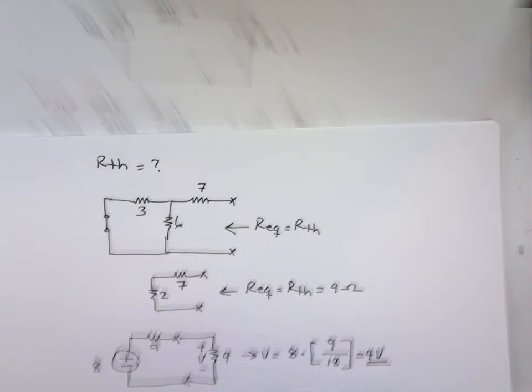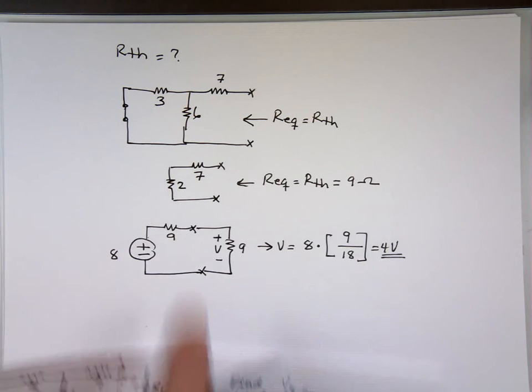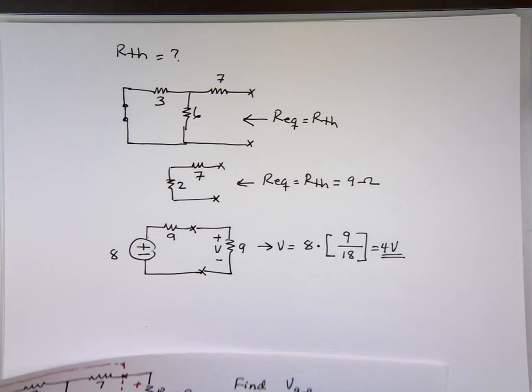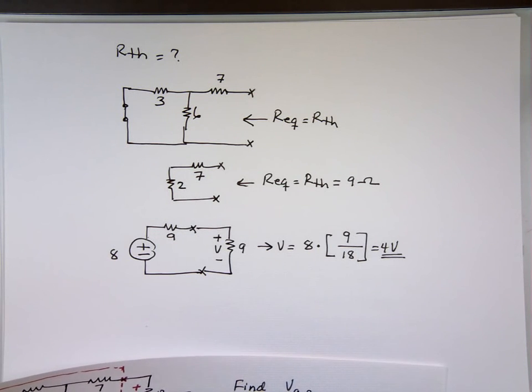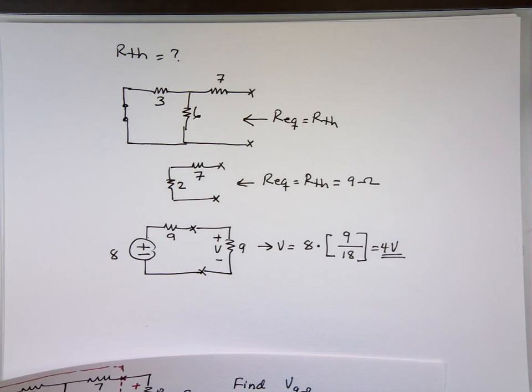So that's how we handle R-7. We only have independent sources, we find V-open circuit and that's your V-7, and we find R-7 by killing all the sources and looking back what is the equivalent resistor. Now what about if your circuit has independent and dependent sources? Let me find one, I'll go to the back of the book and grab one.